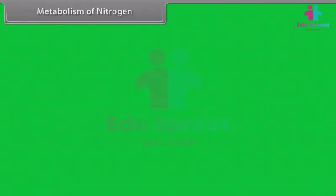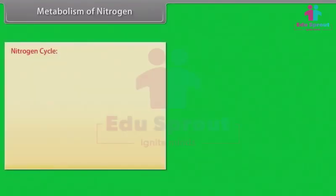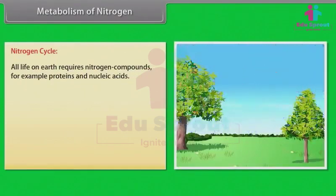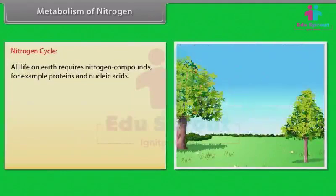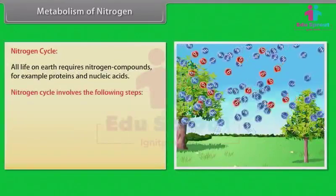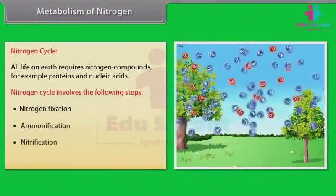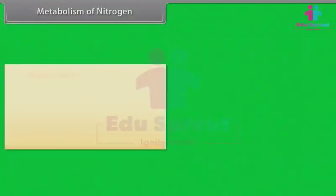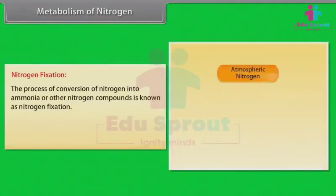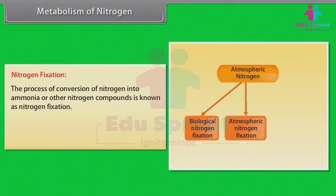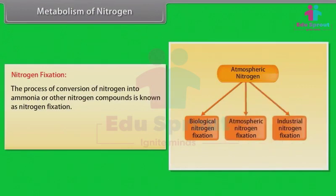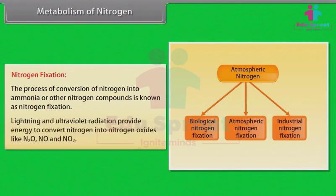All life on earth requires nitrogen compounds, for example proteins and nucleic acids. The nitrogen cycle involves the following steps: nitrogen fixation, ammonification, nitrification, and denitrification. Nitrogen fixation is the process of conversion of nitrogen into ammonia or other nitrogen compounds. Lightning and ultraviolet radiation provide energy to convert nitrogen into nitrogen oxides like N₂O, NO, and NO₂.